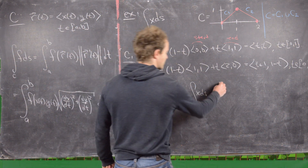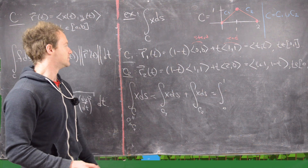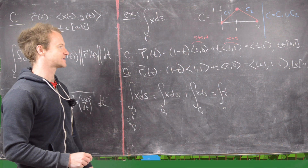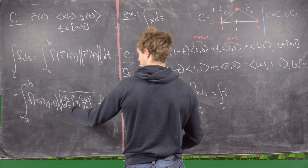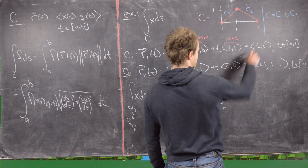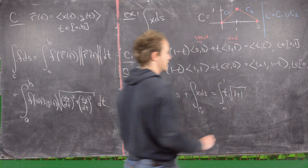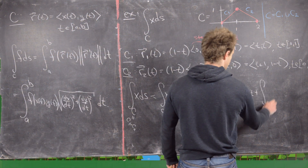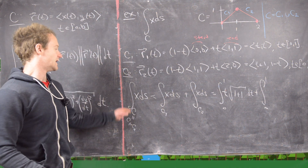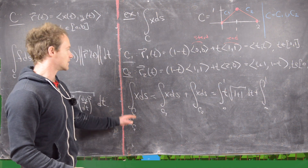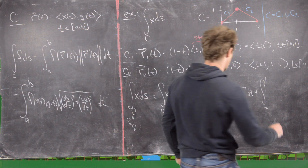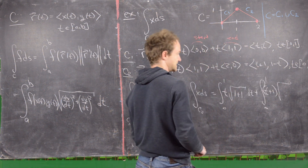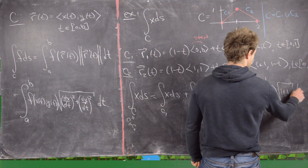For C1 that's the integral from 0 to 1 of x, where x equals t. For ds, the square root of (dx/dt)² + (dy/dt)² gives √(1² + 1²) dt. Then we add the integral from 0 to 1 for C2, where x equals t+1, and the square root of (dx/dt)² + (dy/dt)² is again √(1+1) dt.